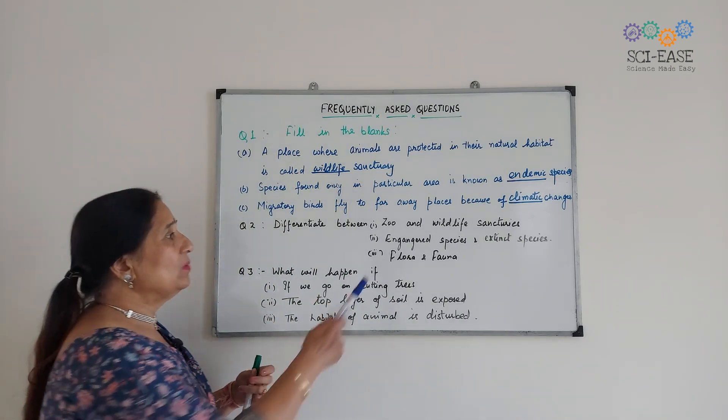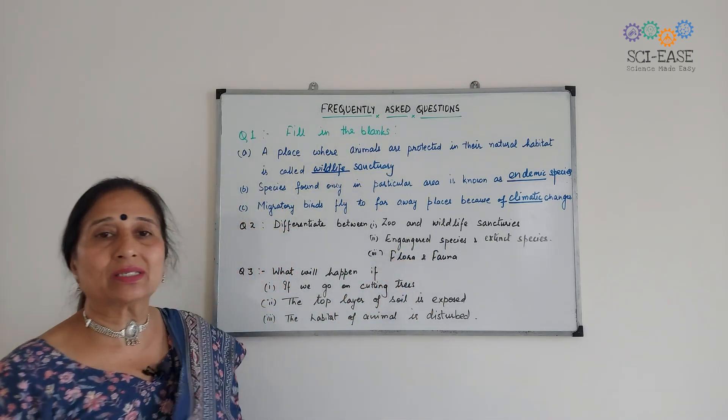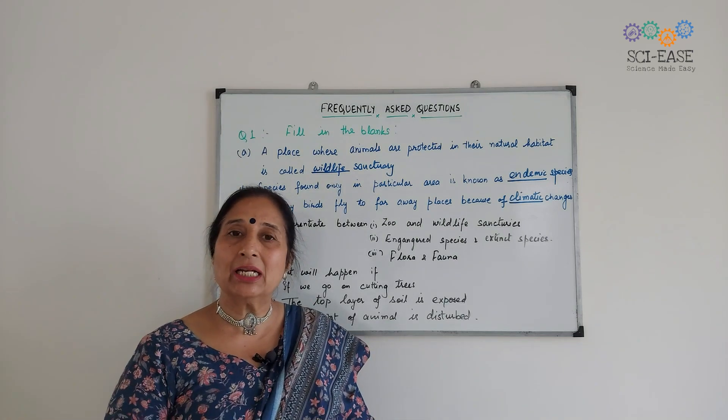Next is the difference between endangered species and extinct species. Endangered species are those whose numbers are declining and are at risk of extinction.